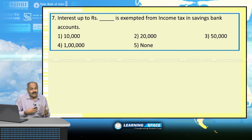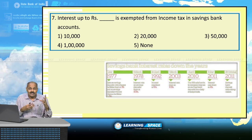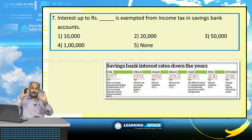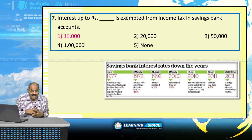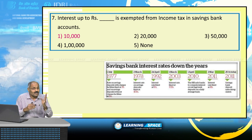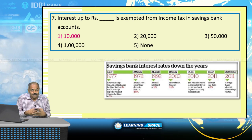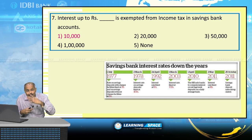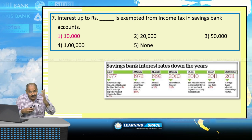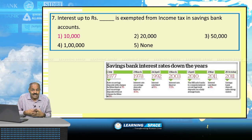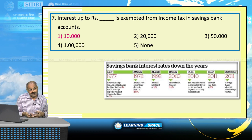Interest up to Rs. 10,000 is exempted from income tax in savings bank accounts. There is no such facility for recurring deposits or fixed deposits. Current account deposits do not carry any interest. From 1st April 2010, interest is calculated on daily available balance. And from 25th October 2011, interest rates are deregulated by RBI, meaning banks are free to determine their own interest rates.